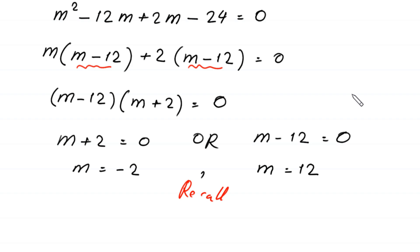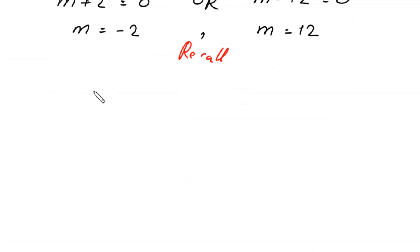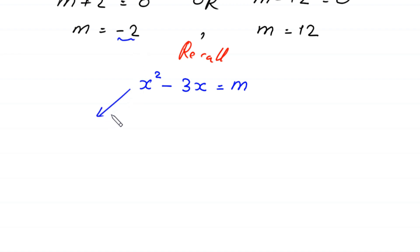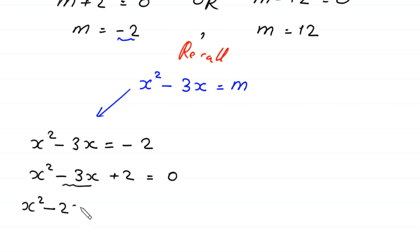Recalling that we supposed x squared minus 3x equals m: when m equals negative 2, the equation becomes x squared minus 3x equals negative 2. Moving negative 2 to the left-hand side gives x squared minus 3x plus 2 equals 0. This is a factorable quadratic, and we split negative 3x as negative 2x minus x, giving x squared minus 2x minus x plus 2 equals 0.